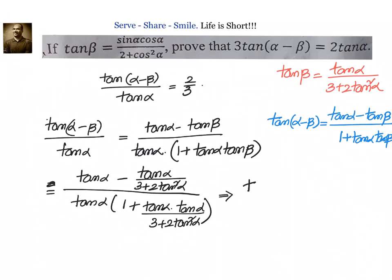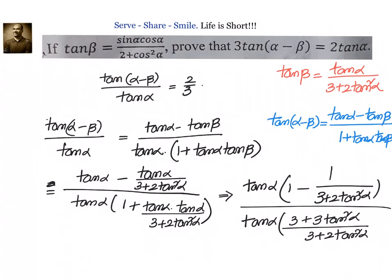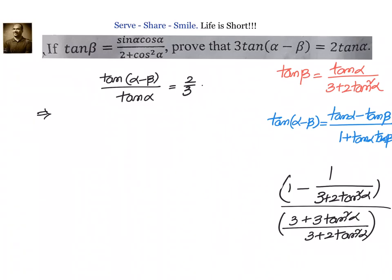Now let us simplify. In the numerator, we can take tan α common. Then we will have 1 minus 1 divided by 3 plus 2 tan squared α. And in the denominator, we will have 1 plus tan squared α, giving 3 plus 3 tan squared α divided by 3 plus 2 tan squared α. We can cancel the tan α terms. That leaves us with 3 plus 2 tan squared α minus 1, divided by 3 plus 3 tan squared α.